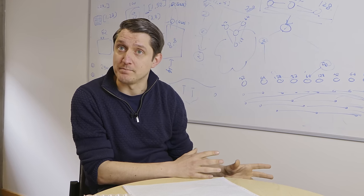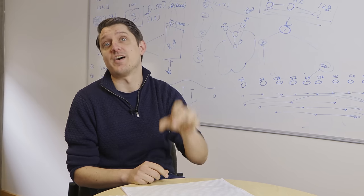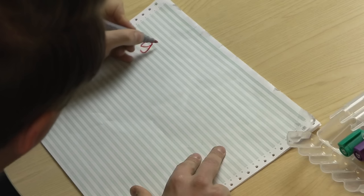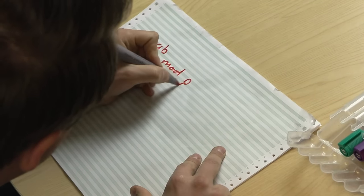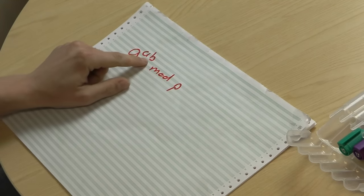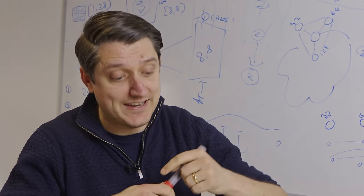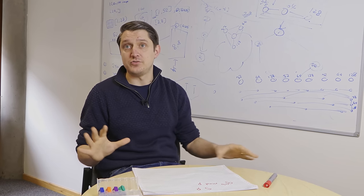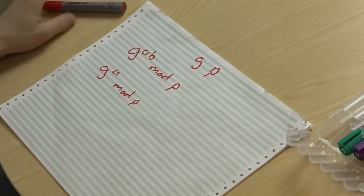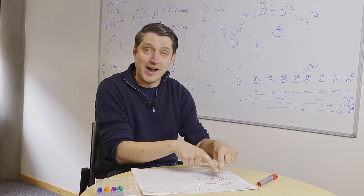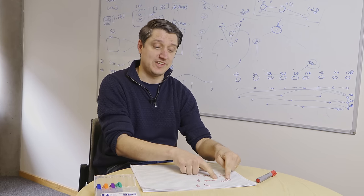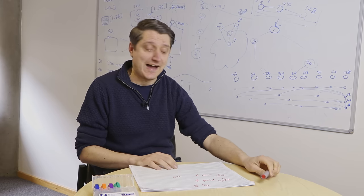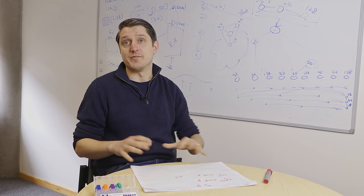Let's think about what Diffie-Hellman is. You have a function G to the AB mod P. P is a very large prime number, A and B are secret numbers that Alice and Bob know, and G is the generator, which is public. At the beginning of the session you agree on G and P. The reason this is hard to break is because you can't take the public values — for example, G to the A mod P — and find out what A was, which you could then use with Bob's public value to create the shared secret. Finding out what A is is called the discrete logarithm problem, and it's thought to be very, very difficult. There are variants of this problem throughout cryptography, including an elliptic curve equivalent.